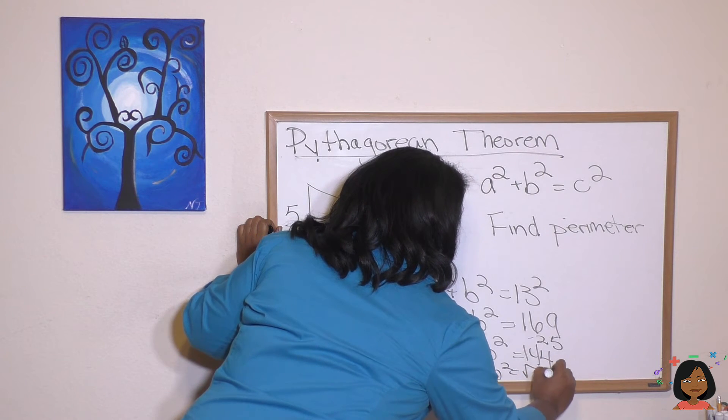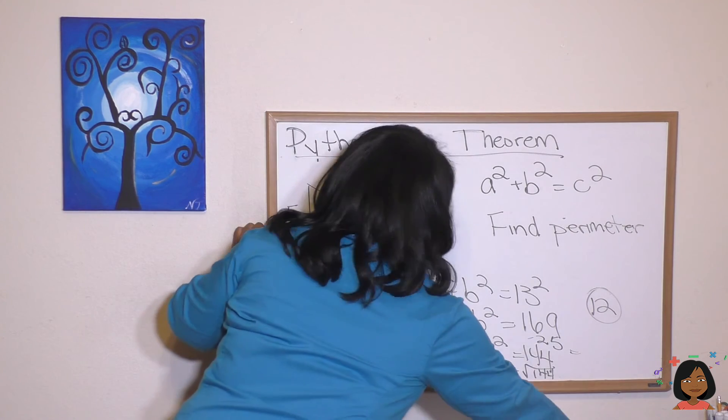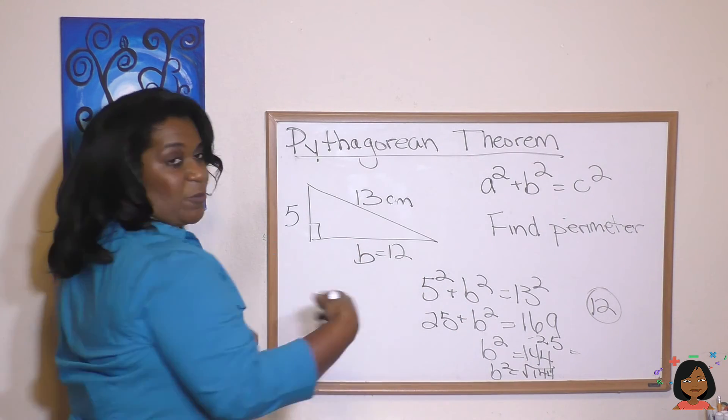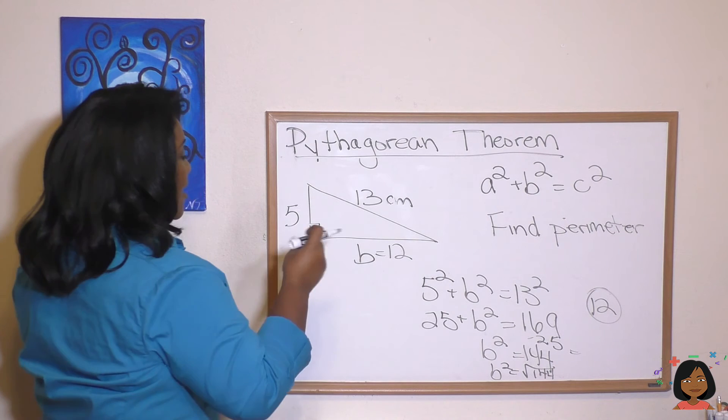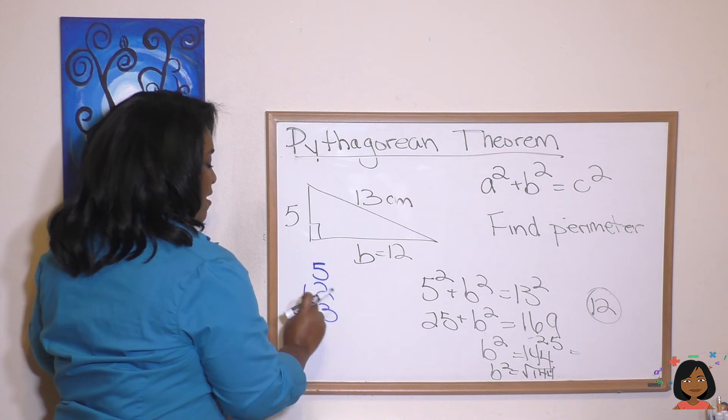Square root of 144 is 12. So let's use that to find the perimeter, which we know is just adding up all of the sides. So we're going to add 5, 12, and 13. And that's going to be 30 centimeters is our perimeter.